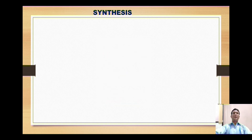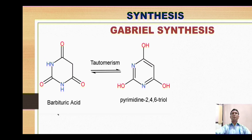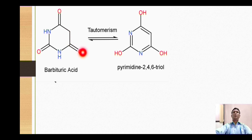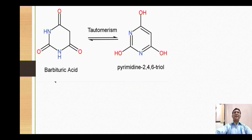The first synthesis is Gabriel synthesis, in which the starting material is barbituric acid. In the structure of barbituric acid we can find the presence of three oxo groups, and adjacent to these oxo groups we have hydrogens. These hydrogens may migrate onto the electronegative oxygen, and thus barbituric acid undergoes tautomerism to give the trihydroxy derivative, which is called as pyrimidine-2,4,6-triol.